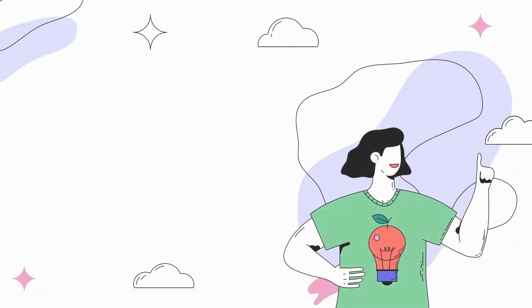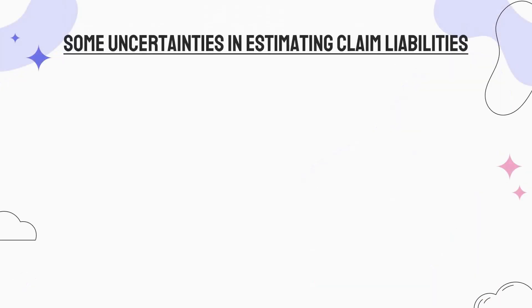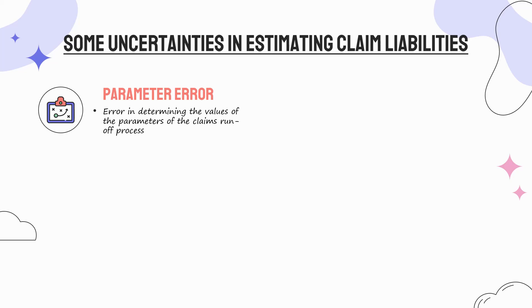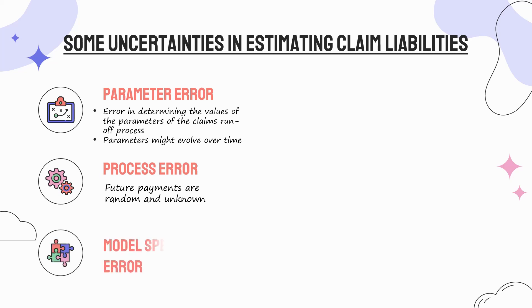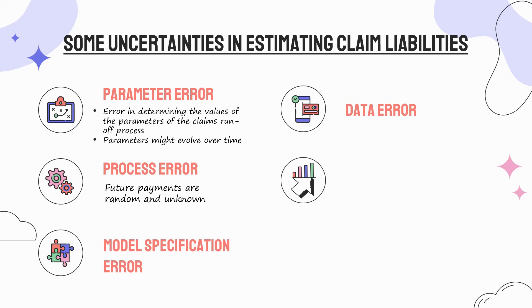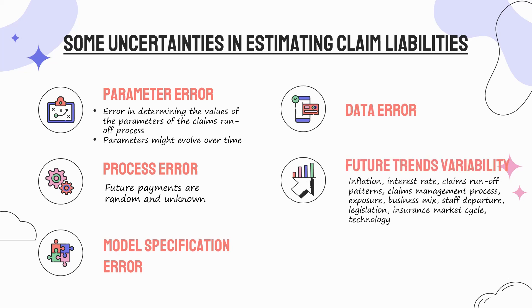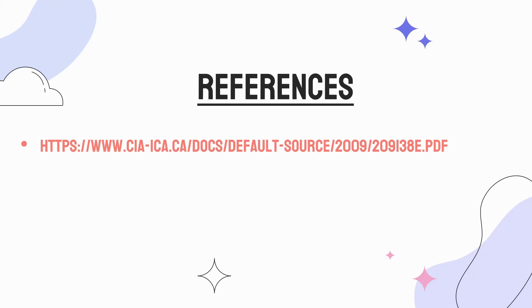We have now fully understood the provision for adverse deviation, but why do we need to determine it? The reason is that there are a lot of uncertainties in estimating claims, making it difficult to capture longevity risk using traditional mortality projection methods. The uncertainties in estimating claim liabilities include: one, parameter error — error in determining the values of the parameters of the claims runoff process, and parameters might evolve over time; two, process error — future payments are random and unknown; three, model specification error; four, data error; five, future trends variability — including inflation, interest rate, claims runoff patterns, claims management process, exposure, business mix, staff departure, legislation, insurance market cycle, and technology; and six, reinsurance risk.